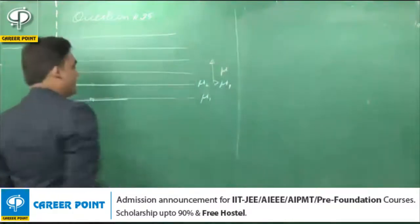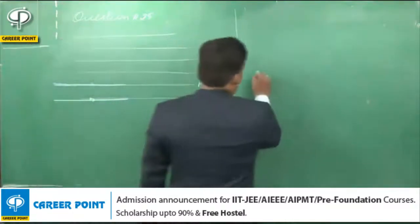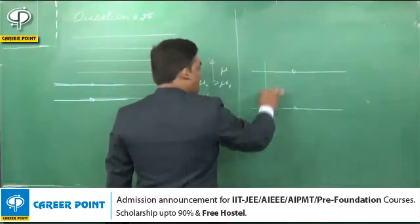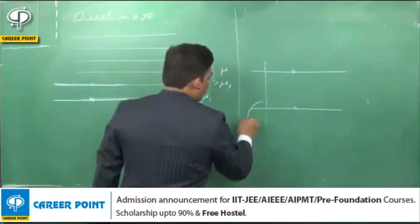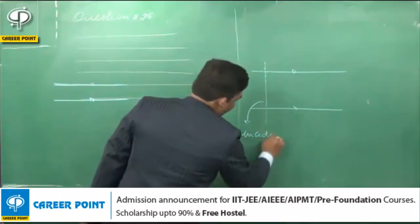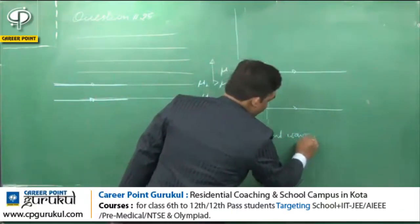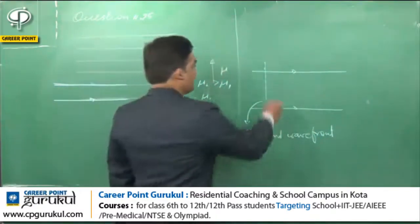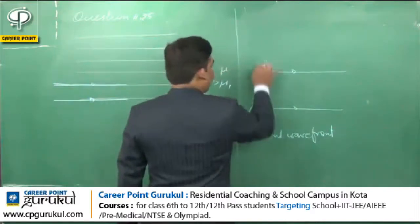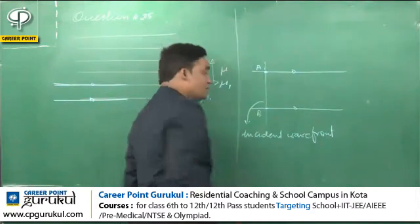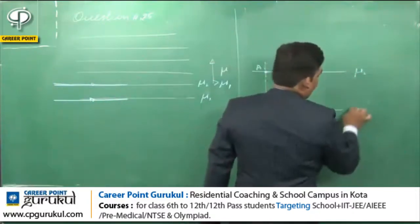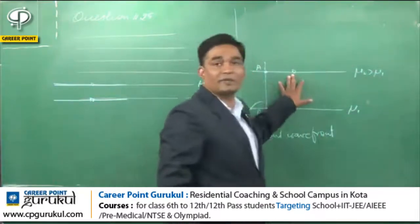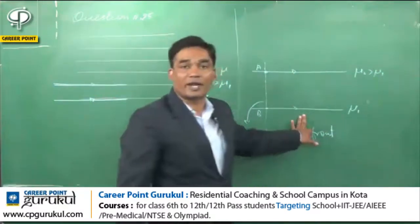We use another ray diagram to explain this problem more accurately. This is the first ray and another ray. This is the wavefront of the incident ray — this is the incident wavefront. We draw secondary wavelets from this incident wavefront, taking centers A and B. Since the refractive index mu2 is greater than mu1, the speed of light in this medium is smaller compared to speed of light in mu1 medium.